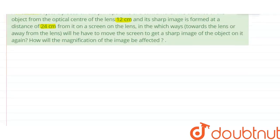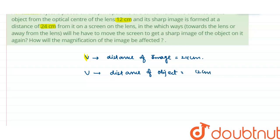In the question they are giving the value of V as well as the value of U. V is the distance of image which is given as 24 cm. U is the distance of object which is given as 12 cm, but it is in the direction of image and so it is minus 12 cm.